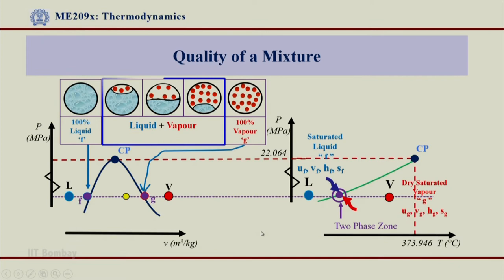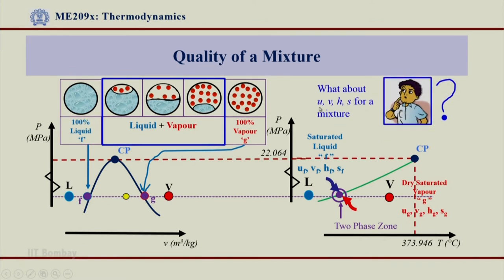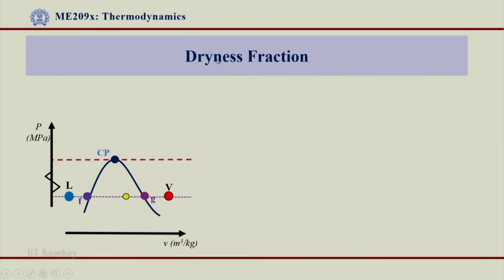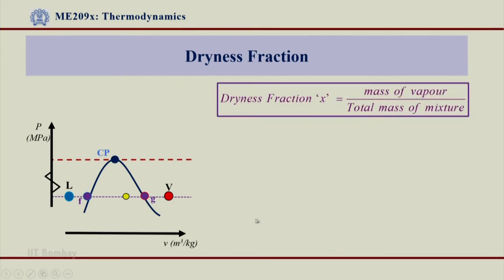The key question is: how do I calculate these properties? How do I get values of specific volume, enthalpy, entropy for a mixture? The steam table gives values for point F and point G, but how do I get all the properties for the two-phase region — that is the question we want to answer. Now we are going to talk about dryness fraction, sometimes also called quality. Quality is referred to as dryness fraction, and this dryness fraction is defined as x.